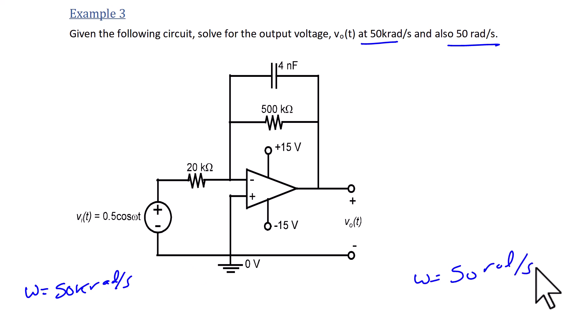So the impedance of the capacitor for 50 kiloradians per second is negative j over 50k times 4 nano, or negative j 5,000 ohms. At 50 radians per second, it's negative j 5 million ohms.